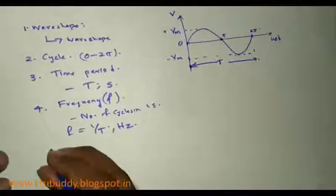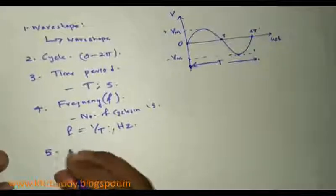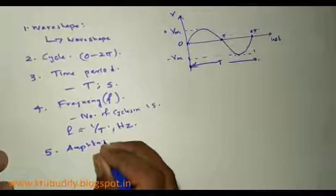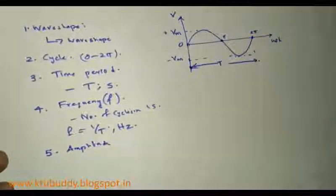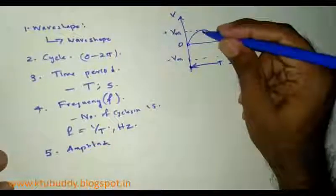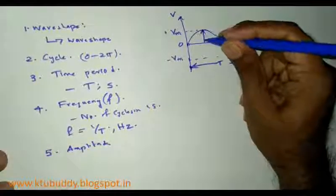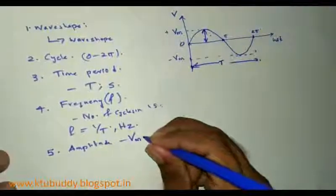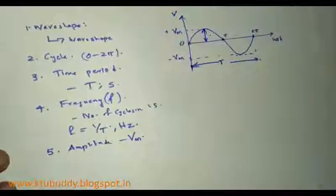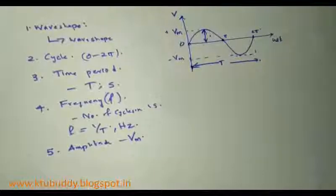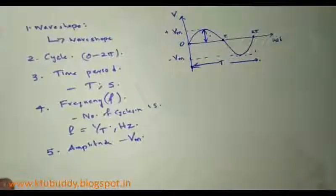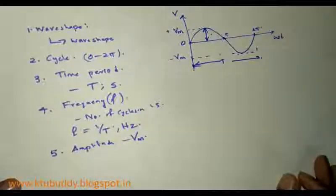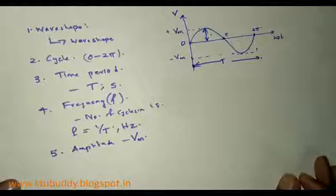The fifth term is amplitude or maximum value. The amplitude or maximum value is the maximum value of the waveform, Vm, and it is known as the amplitude or maximum value of the waveform. These are the different terms associated with alternating current. Thank you.